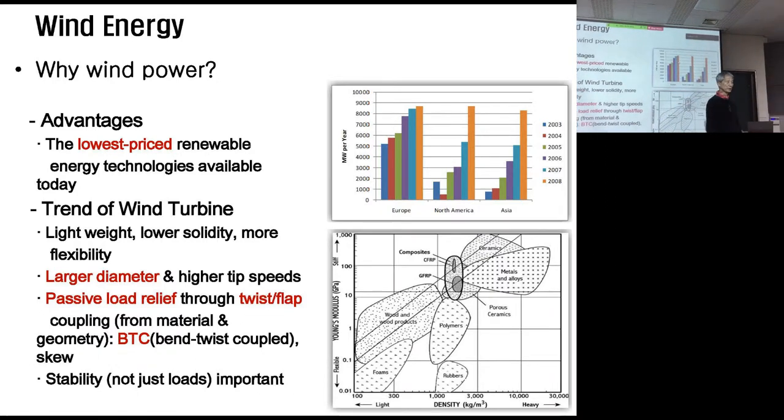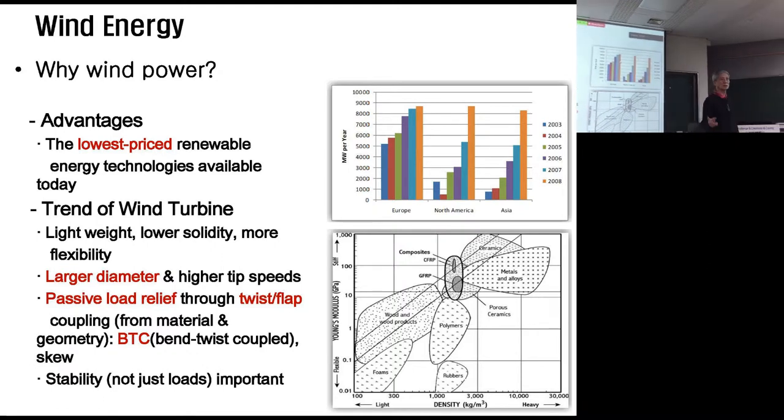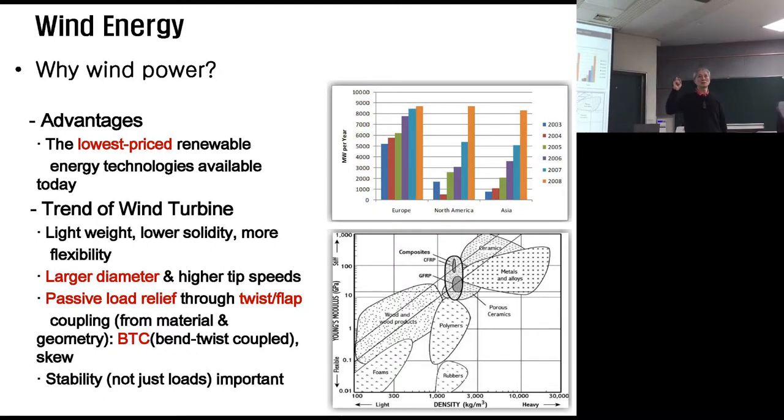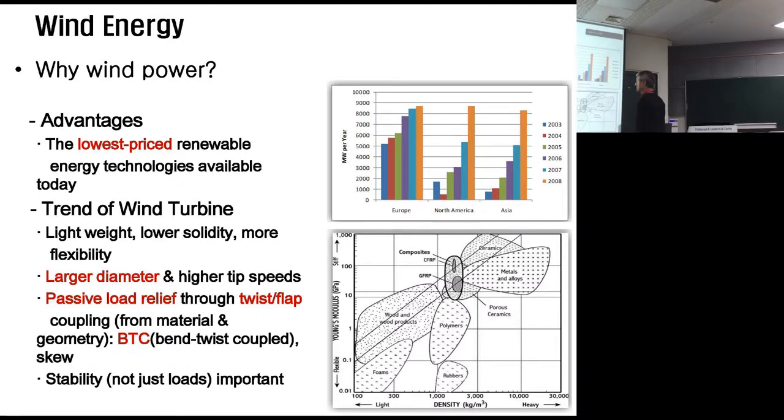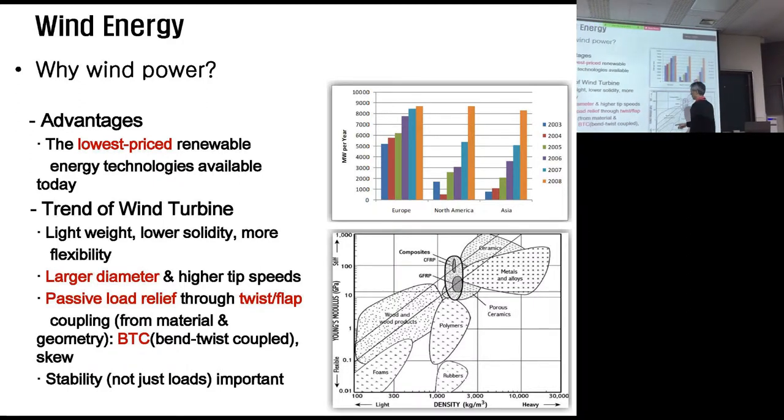Passive load relief through twist-flap coupling from material geometry: BTC (bend-twist coupled) skew. Stability, not just loads, is important. Can you remember when you visit the Eureka building? At the first floor there is a wind turbine rotating, about this size, inside the building first floor. The wind rotates, but you may not notice that the blade shape is not straight, a little bit bended. That was one of the research products, and we call this a BTC blade.